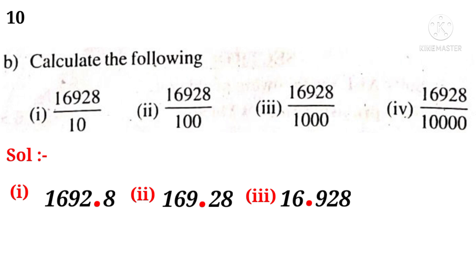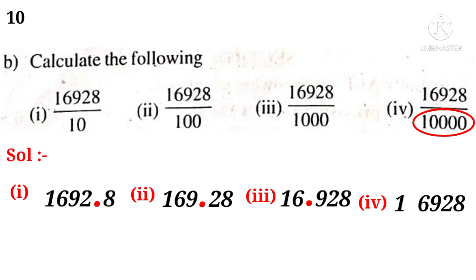Solution 4: observe that there are four zeros in the denominator. So, put a decimal point counting from right side to left side after four digits. That is 1.6928 is the answer.